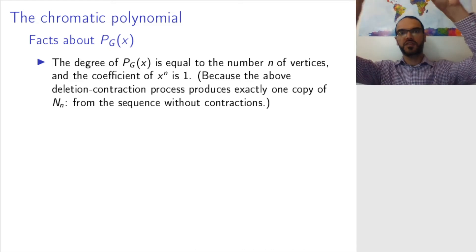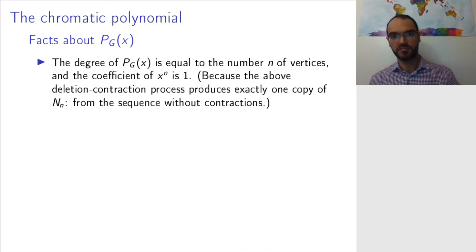Well, how did we get the polynomial? We took our graph and we reduced to these null graphs, remember? And in this process, only one of these null graphs will have kept all the vertices. And this is the one where we have deleted at each step's vertices, where no contractions came along the way. And that one will contribute one factor x to the n, one term x to the n, and that is why this is the degree of the polynomial and the coefficient is 1. All other null graphs have fewer vertices.